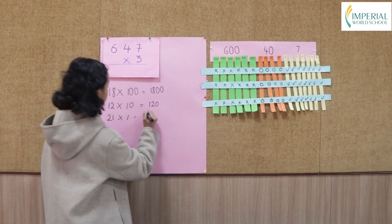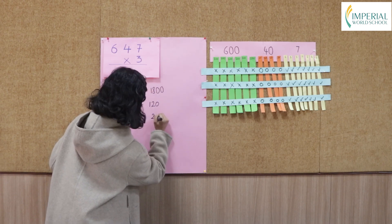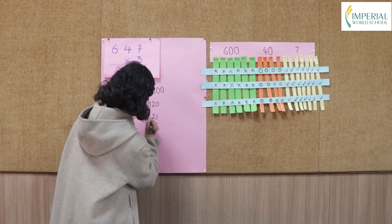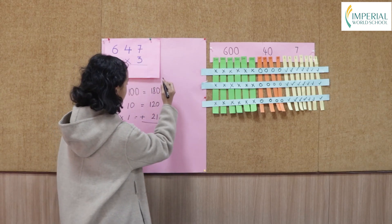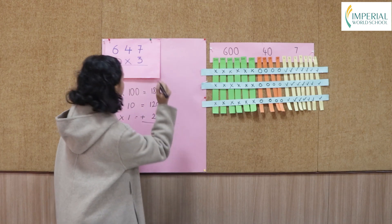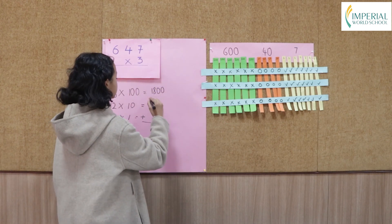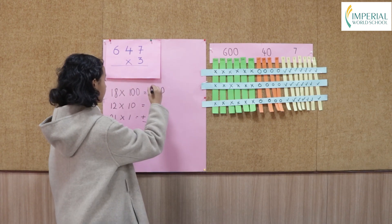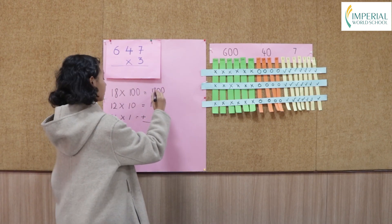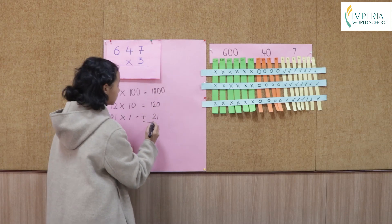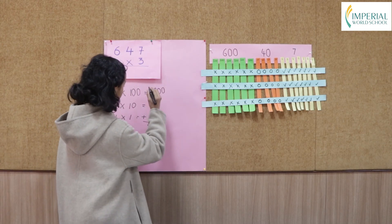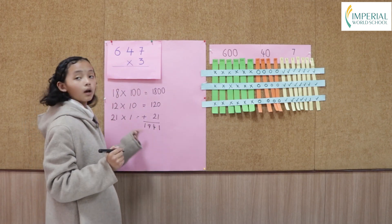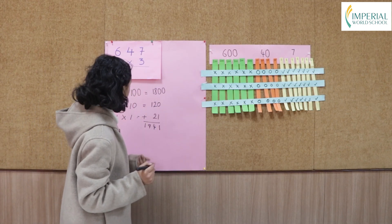Now let's add these numbers. 0 plus 0 plus 1 equals 1. 0 plus 2 plus 2 equals 4. 8 plus 1 equals 9. 1 plus nothing equals 1. The answer is 1,941.